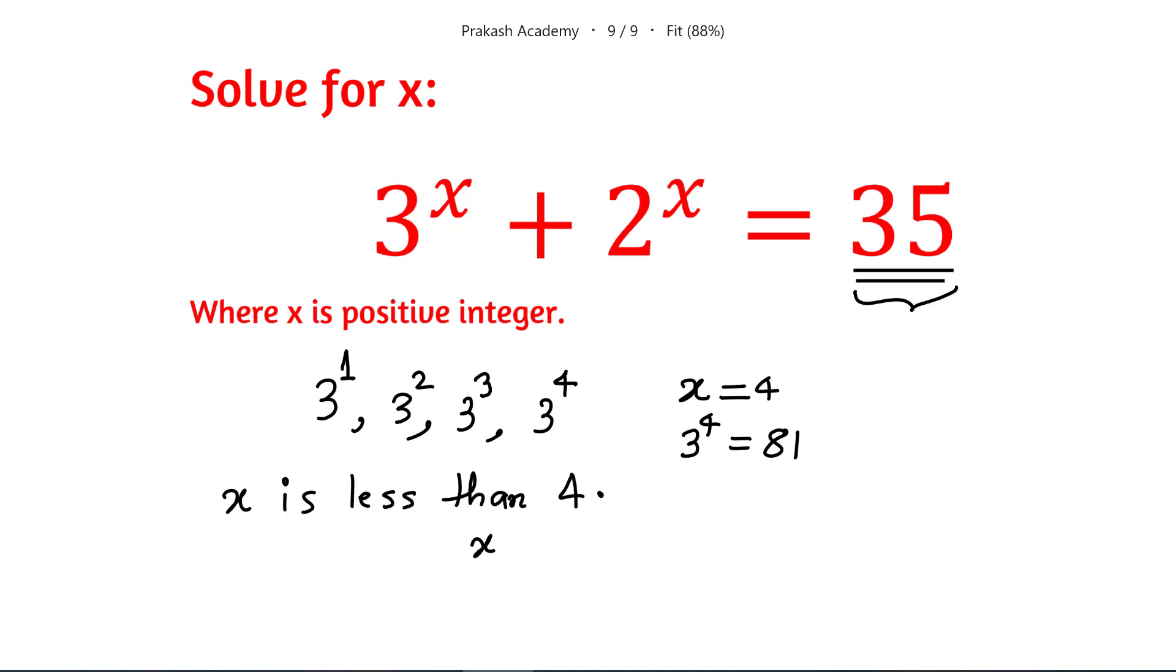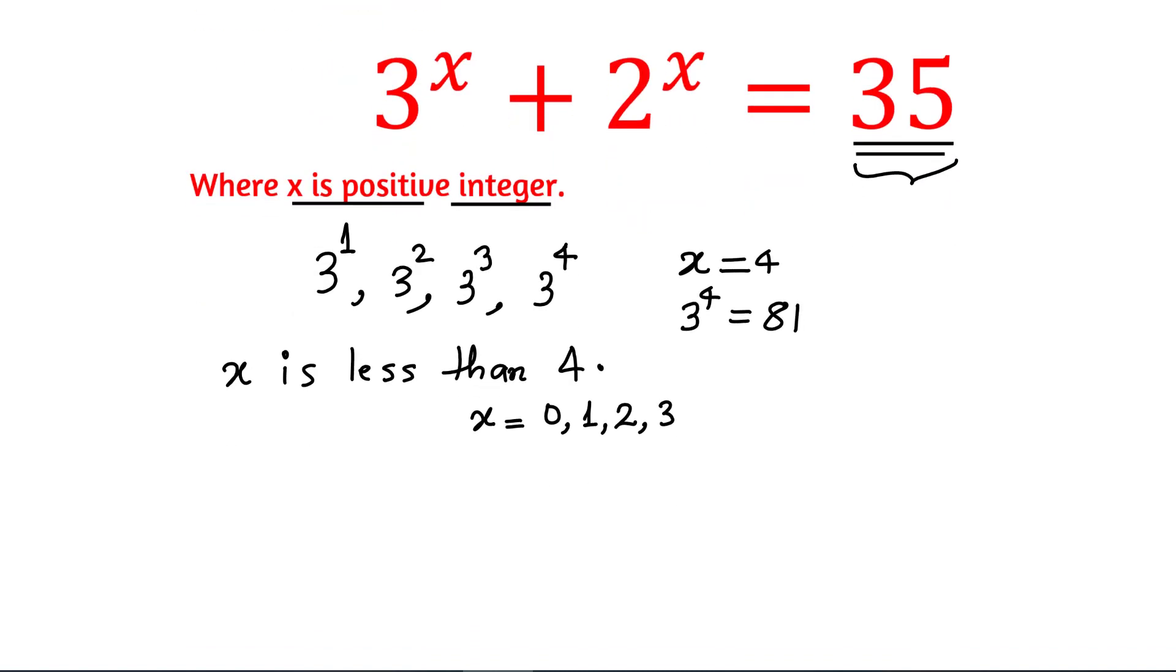Now, what are the possibilities? X can be 0, X can be 1, X can be 2, or X can be 3. Now it is easy to check because we have been given that X is positive integer.